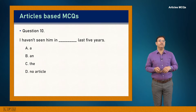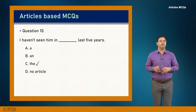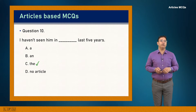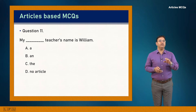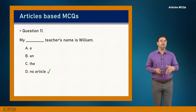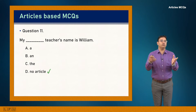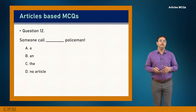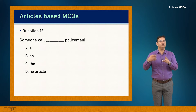Question 10: I haven't seen him in dash last five years. A specific number of years implies definiteness, so 'the last five years' is correct. Answer is C. Question 11: My dash teacher's name is William. A possessive determiner 'my' is already present, so no article is needed. Answer is D — 'My teacher's name is William.'